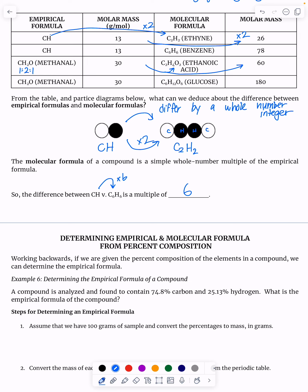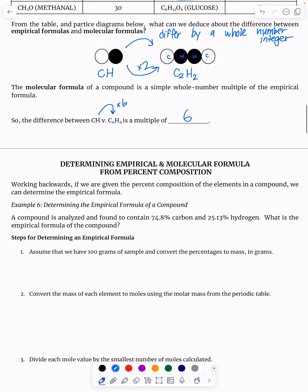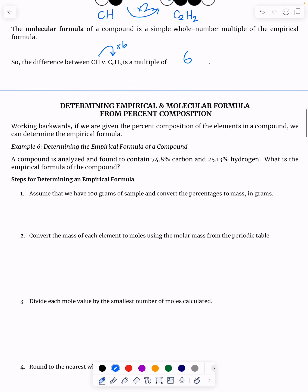So just a little definition there. We're going to get to the end of this lecture here, talking about how to determine an empirical formula. And this is so, so, so important. Working backwards, if we're given the percent composition of the elements in a compound, we can determine the empirical formula.